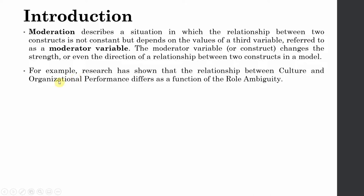For example, research has shown that the relationship between culture and organizational performance differs as a function of role ambiguity. If there is high role ambiguity, the relationship between collaborative culture and organizational performance actually weakens. However, at low role ambiguity, this particular relationship is further strengthened.